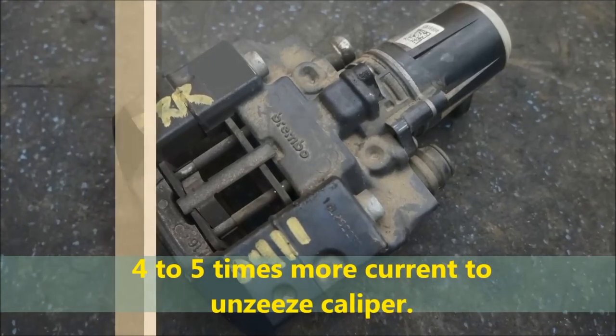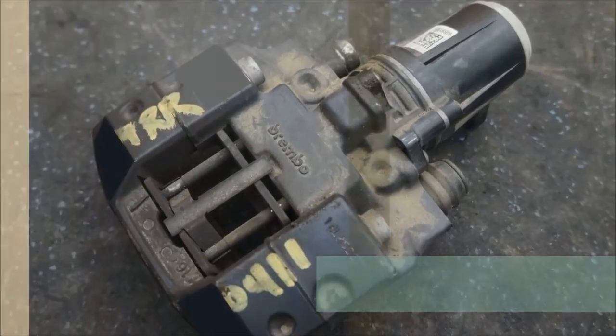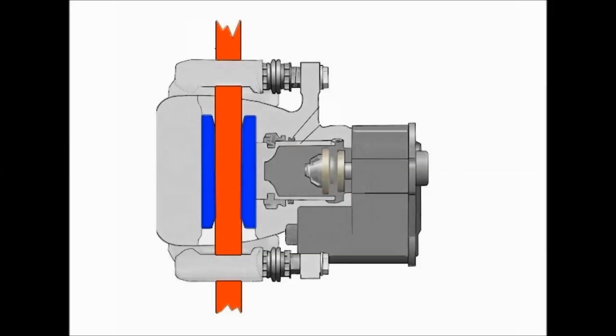Remember that you need four to five times more current to unseize a caliper. Sometimes it's really seized in there. So you're going to have to play with it. And oftentimes if it's locked, if it seizes completely, you cannot, whether you have the retractor or you use the ECM with the scanner, it doesn't really matter. You're not going to, it's not going to work because it's seized. You can disassemble it and unseize it. A lot of mechanics do that.